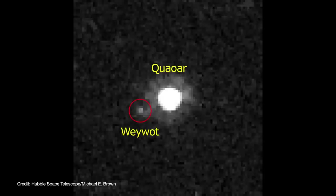In 2007, Mike Brown discovered a satellite of Quaoar that was dubbed Weywot, named after the deity's son.